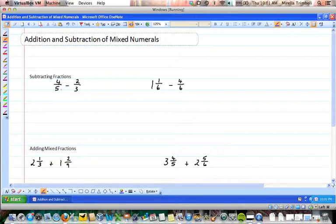So we can see that five and three would both go into 15, so if we multiply the first fraction top and bottom by three and the second top and bottom by five, we will have four times three is 12 over 15 and two times five is 10 over 15, and 12 take 10 is 2 over 15.